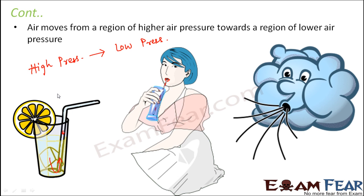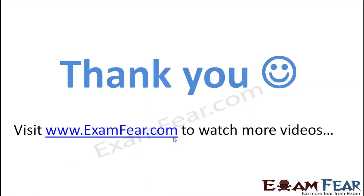On the contrary, when we try to ride a bicycle opposite to the direction of wind, we need to apply a lot of extra effort. That's because the movement of wind exerts an opposite force on us, opposing our motion, and in order to overcome that, we need to put in extra effort. This is the concept of air pressure.